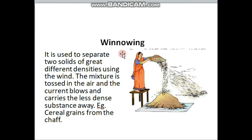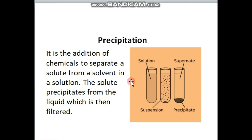Winnowing is a method used to separate two substances of different densities. The mixture is tossed in the air and air currents carry the less dense substances away. For precipitation, there are very stubborn particles that will never settle on their own. A chemical is added to the substance, causing those solid particles to finally settle down. This is defined as the addition of chemicals to separate a solute from a solvent in a solution — the solute precipitates from the liquid, which is then hot-filtered.